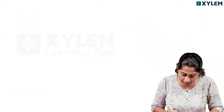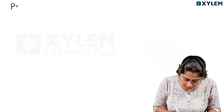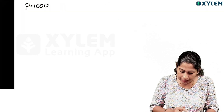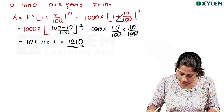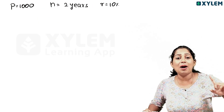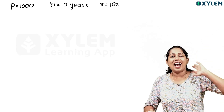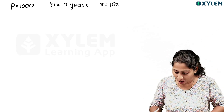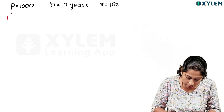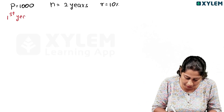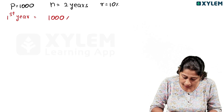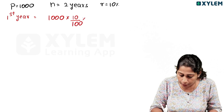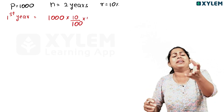Now for the second method: P equals 1000, number of years N equals 2 years, and rate of interest is 10%. We will solve it year by year using the simple interest equation for each year.